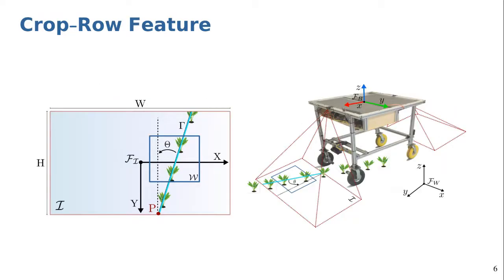To navigate along a crop row we extract a curve along which the crops are arranged. To do this, for each camera image we first compute the vegetation mask using excess green index. Then for each connected component in the vegetation mask which are crops we compute the center point.